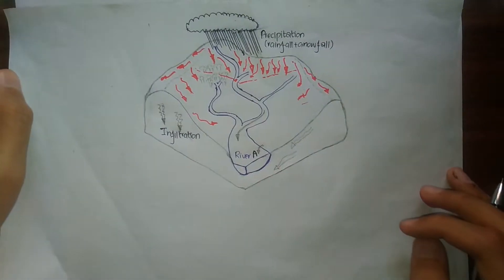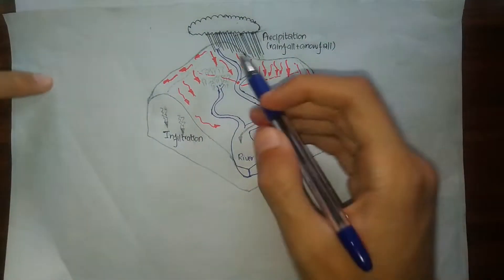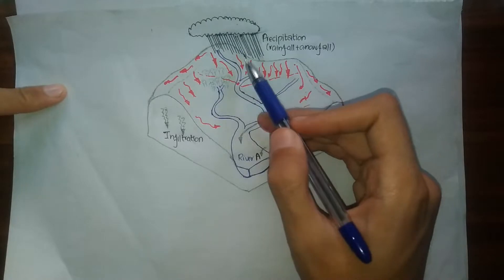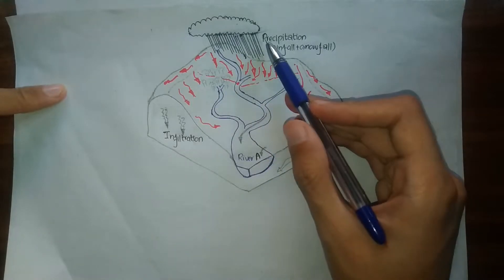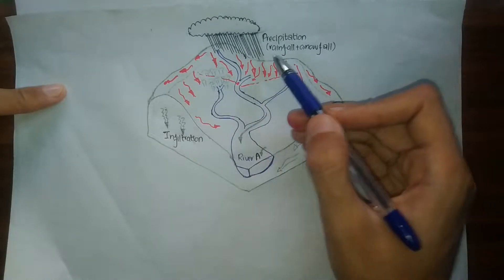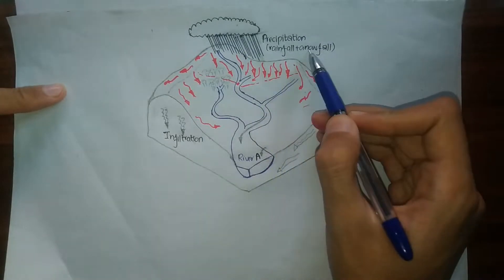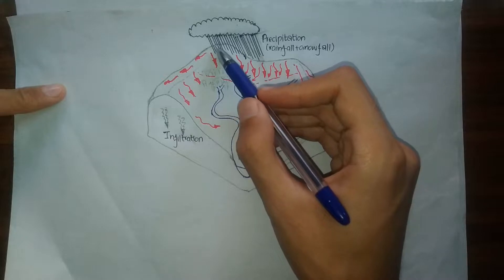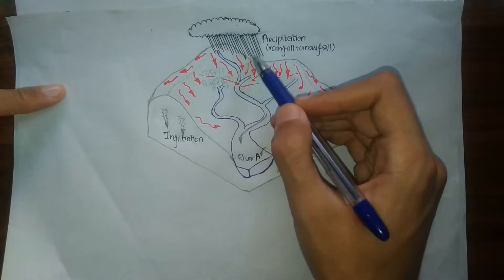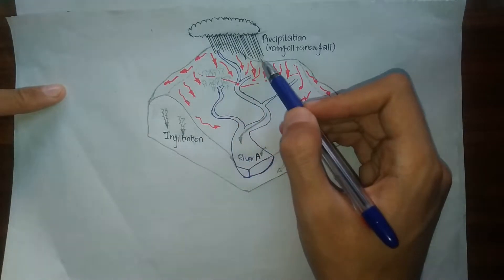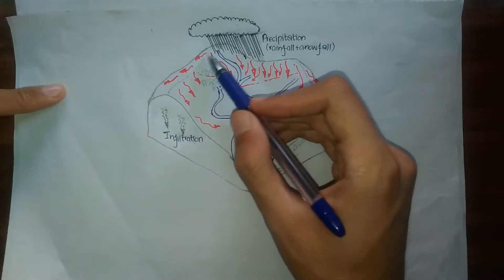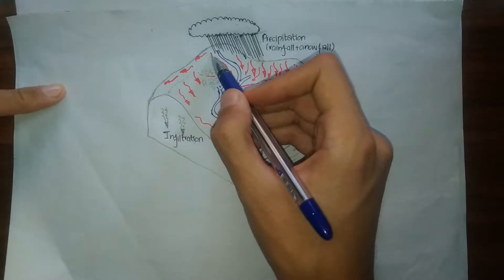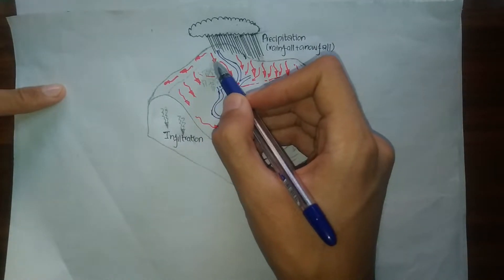As you can see in this figure, we have some precipitation going on, and our precipitation refers to both rainfall and snowfall. As all the rain water or snowfall reaches the land surface, it gets divided into two portions.